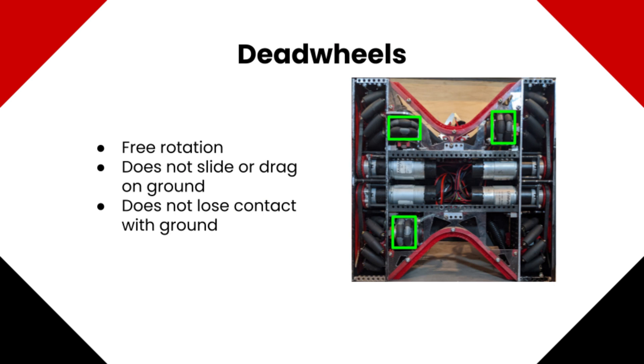In the case of our robot, we have two dead wheel encoders facing front to back and one facing sideways. These wheels are not being driven by a motor and have springs allowing them to remain in contact with the ground so that they are not subject to slip.